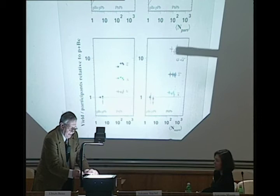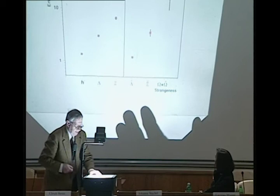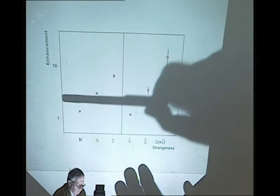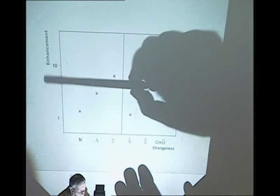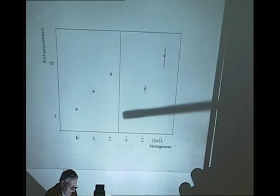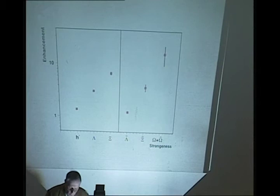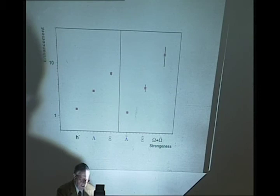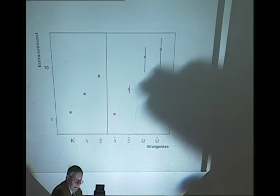Since they are similar, I am allowed to take average values. This is the enhancement. For negatives, near to 1, the lambda, near to 2, and xi, higher, near to 6 or 7. And for this particle which have no quark in common, you have the anti-landa, anti-xi, anti-omega. Omega and anti-omega here are together. The statistics decrease, but here are the omega and the anti-omega separately. We clearly see a hierarchy of enhancement.